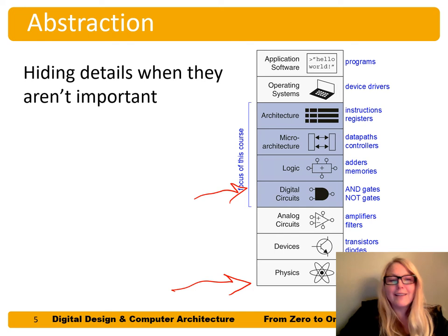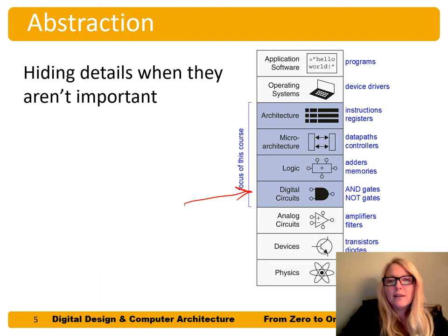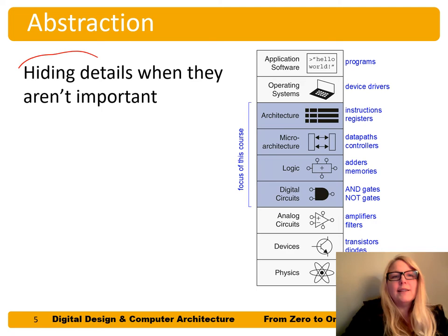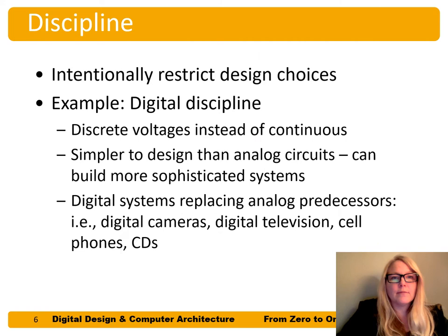Sometimes we'll pop down a level of abstraction to think about the implications, but typically when you're working at a level of abstraction — for example digital circuits — you'll mostly be thinking about the levels above and below that level. Abstraction is hiding details when they aren't important.